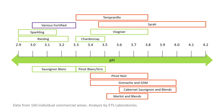Viognier has a pretty wide range — a Washington State Viognier at 3.4, ranging up to 3.8 for a Condrieu. Sauvignon Blanc and Pinot Gris tend to be lower on the scale. Sauvignon Blancs have a range of 3.0 to 3.3, which you'd already know from tasting — they tend to be high in acidity. That includes wines from the Upper Loire and Western Australia.